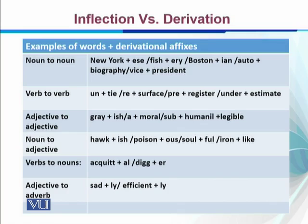These are affixes which are added to words and they play a grammatical role — in some cases they give us the meaning of a word and in other cases they change the class of the word. Inflectional morphemes do not change the class of the word, whereas derivational morphemes in most cases do change the class of the word. These are the key differences between inflection and derivation.